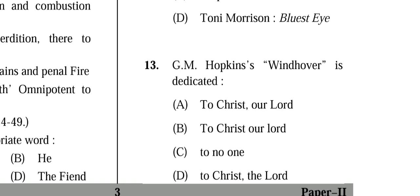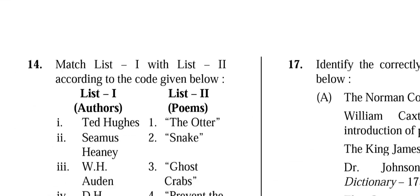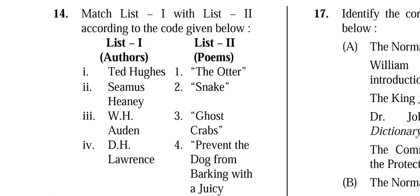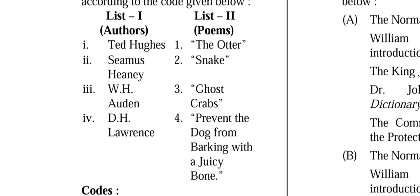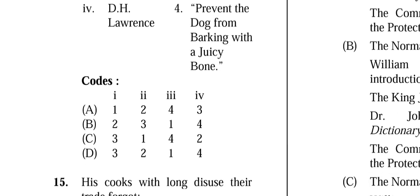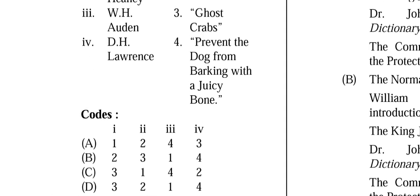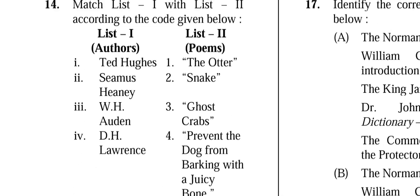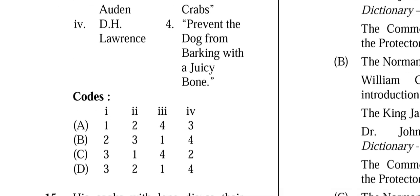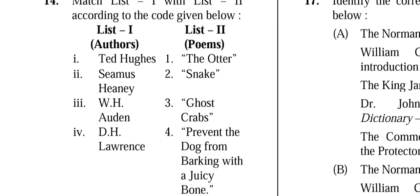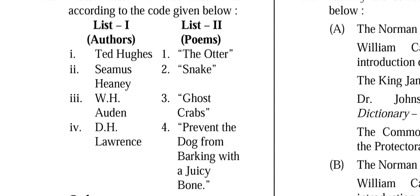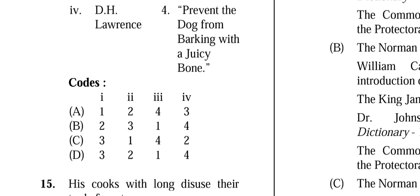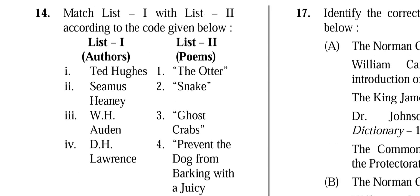Question 13: GM Hopkins' 'The Windhover' is dedicated to whom? The correct answer is 'Christ our Lord.' Question 14: Match List 1 with List 2. The correct answer is (C): 'Dead Houses and Ghost Crabs' matches entry 3; WH Auden — 'Prevent the dog from barking with a juicy bone'; DH Lawrence — 'Snake.'